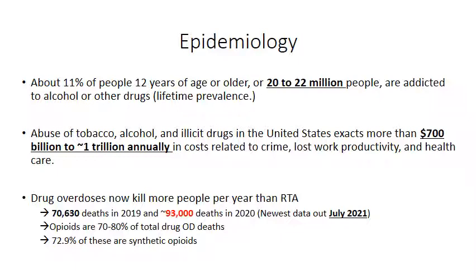Unfortunately, drug overdoses are killing many more people than they used to, especially since the pandemic started. Newer numbers for data from May 2020 through July 2021 show about 100,000 people have died due to drug overdoses. The majority of these overdose deaths occurred due to opioid overdose, and most of these opioids are synthetic opioids such as fentanyl.